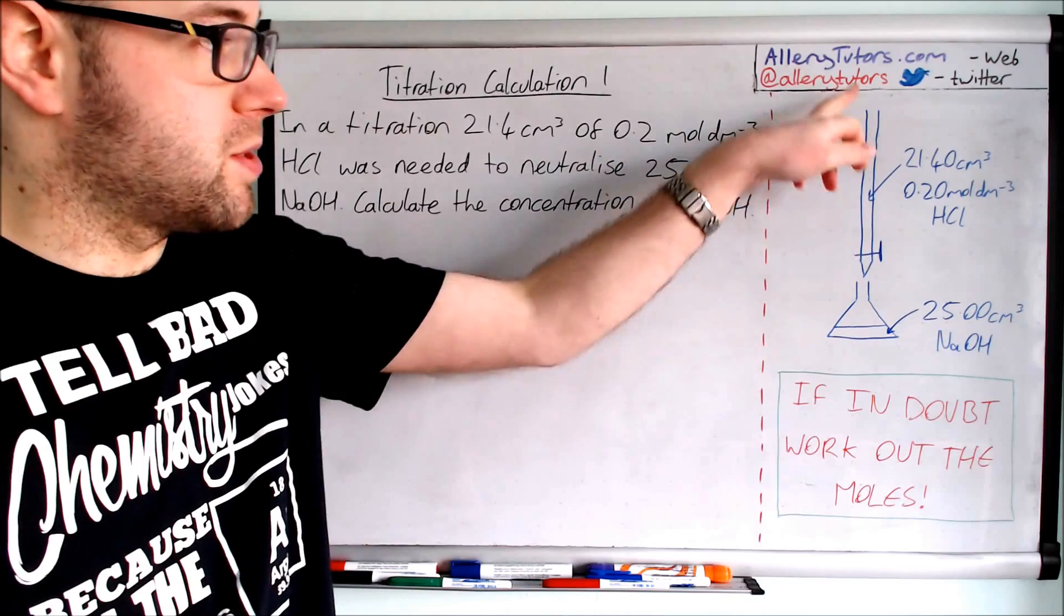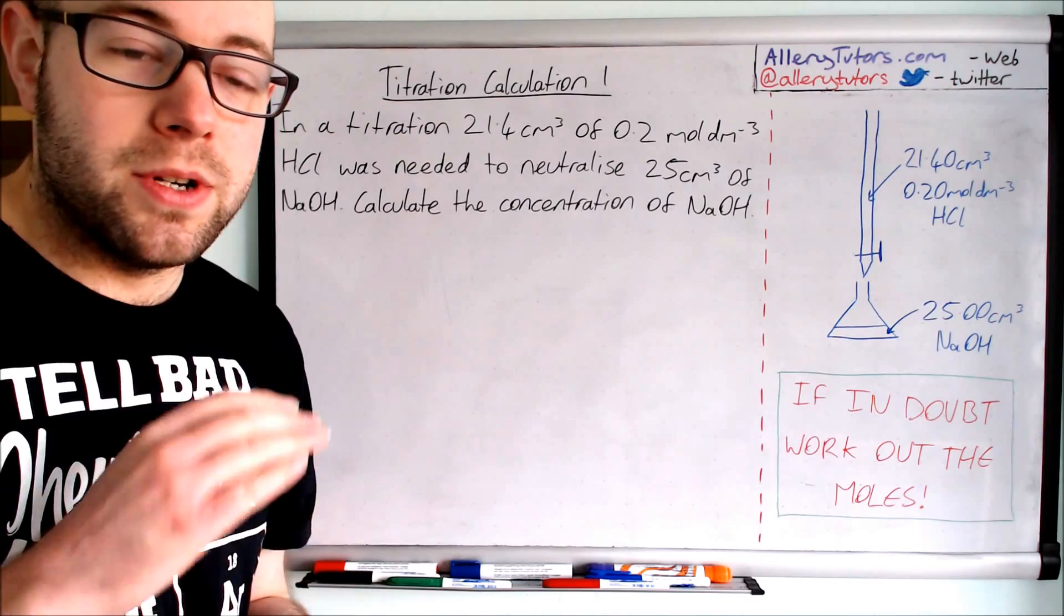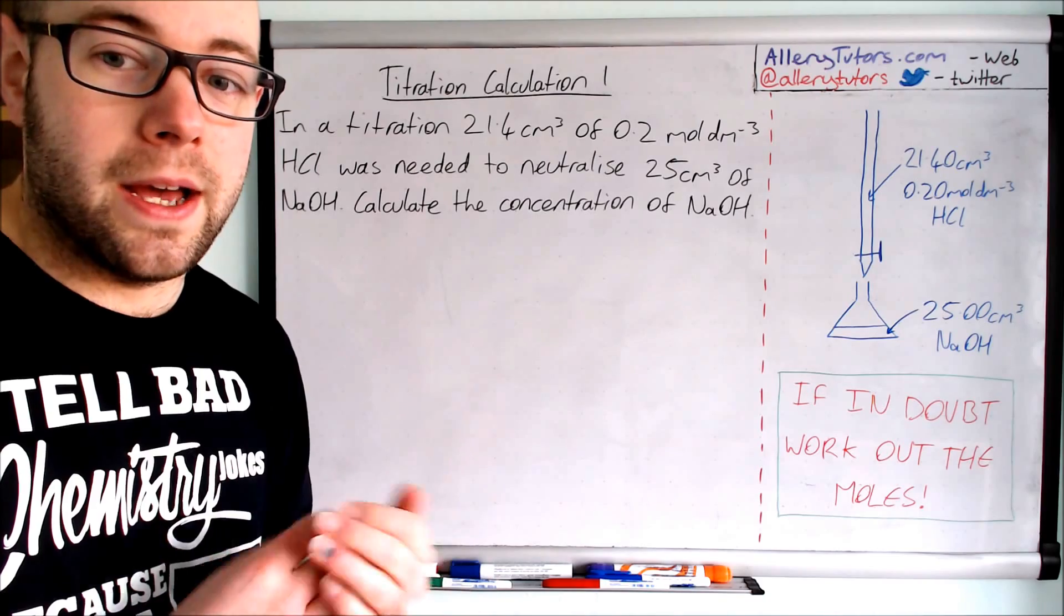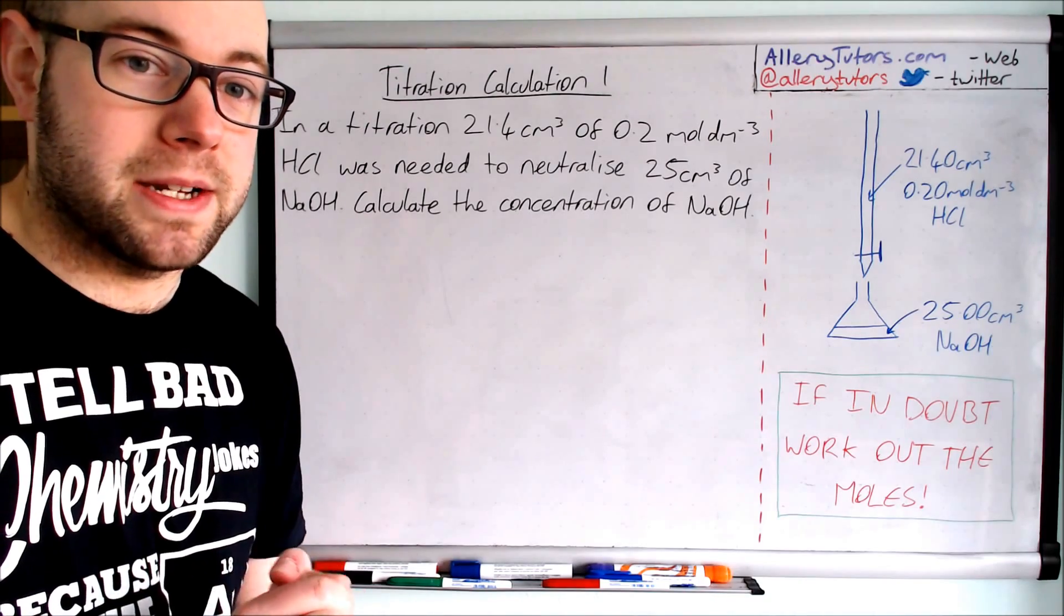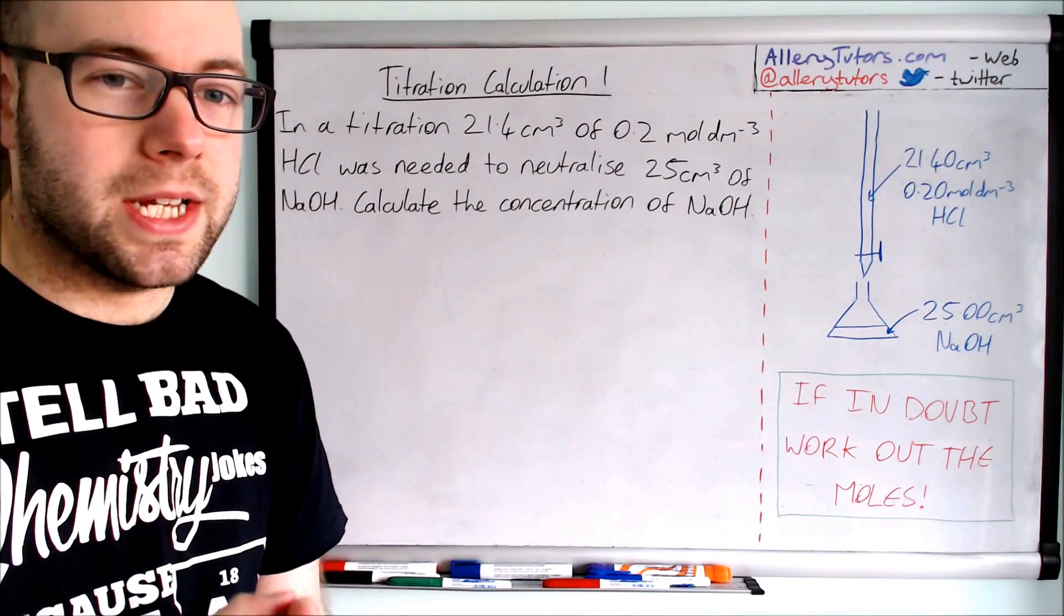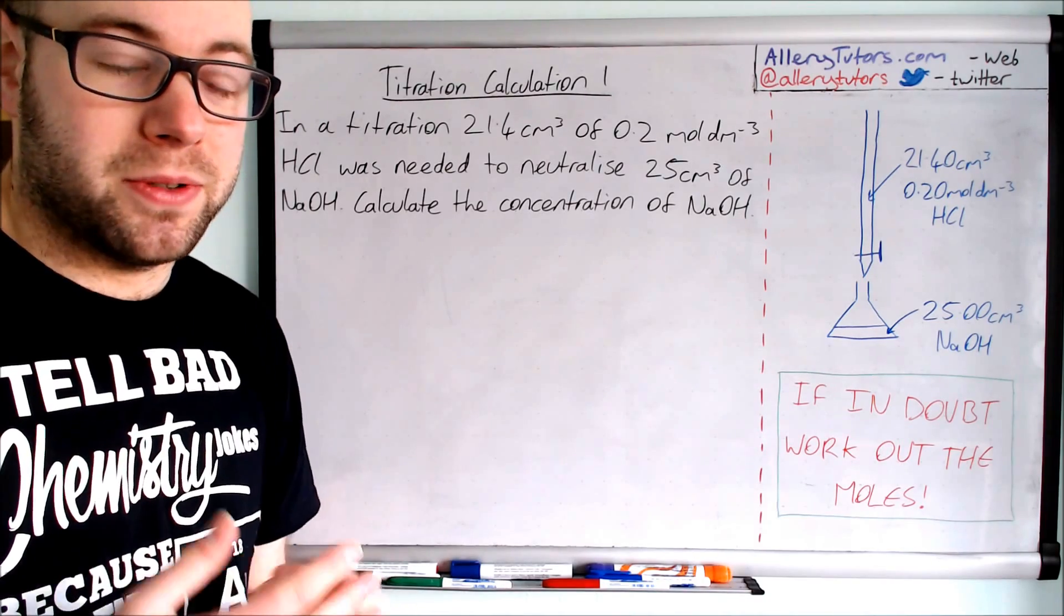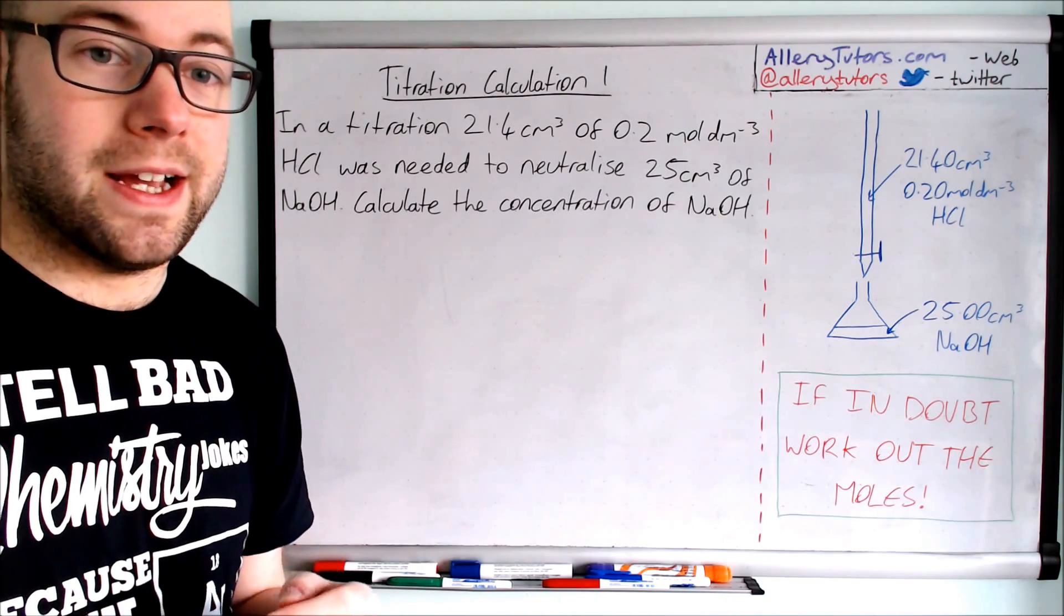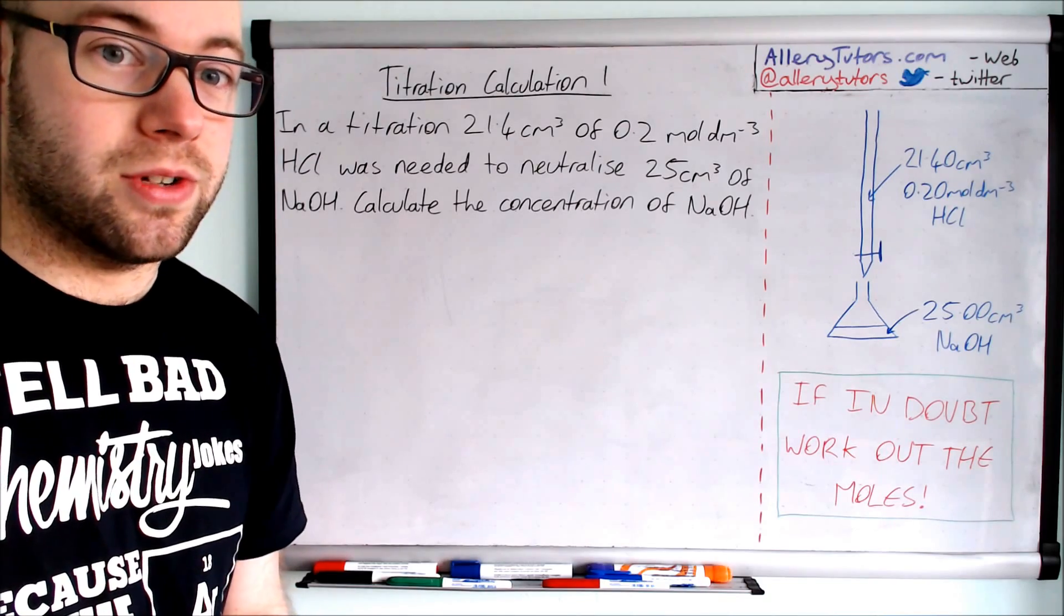So you have your burette over here, and inside you have hydrochloric acid. We know two things: we needed 21.40 centimeters cubed of HCl and the strength was 0.20 moles per decimetre cubed. In the conical flask we have 25 centimeters cubed of sodium hydroxide. You would also have an indicator inside here which would indicate when your end point has been reached, and that's when you would stop titrating and measure the volume of acid added.